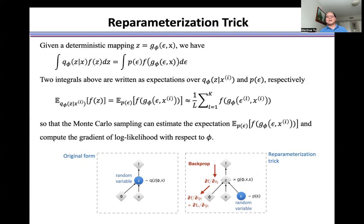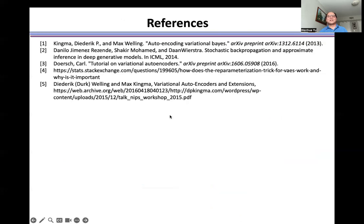After we train the model, the autoencoder can be used to reconstruct the input distribution or generate a new distribution. For more details, please check these references. Thank you, bye.